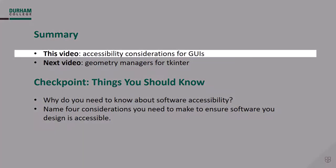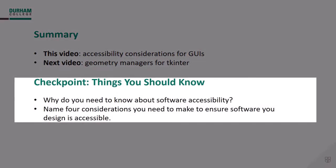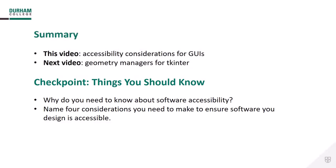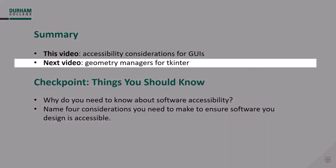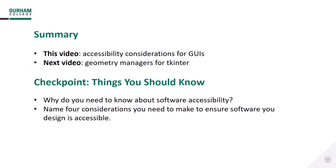So in this video, we talked about accessibility considerations for graphical user interfaces. You should be able to make the case as to why software accessibility matters, and list those four main considerations to ensure the software you design is accessible. In the next video, we'll talk about the geometry managers for Tkinter, which is how you set up the layout for a Tkinter application.